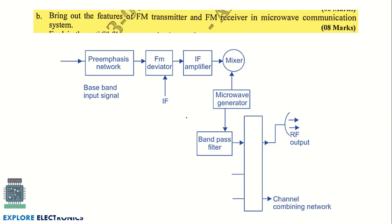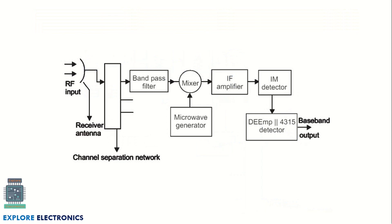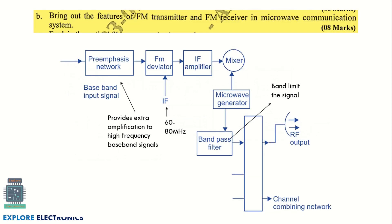The next question asks you to bring out the features of the FM transmitter and FM receiver in a microwave communication system. This carries eight marks, split as four marks each for the transmitter and receiver. Within each, two marks are for the diagram and two marks are for the explanation. Draw and explain the FM transmitter block diagram and then the FM receiver block diagram for the microwave communication system.